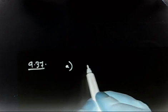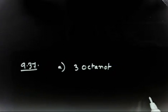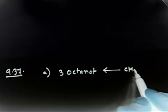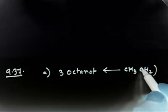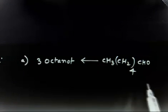This problem (9.37) is again related to Grignard reagents. The question asks: how would you synthesize the following compounds using Grignard reagents and any other necessary reagents? The first target is 3-octanol, which we have to prepare from hexanal, that is CH₃(CH₂)₄CHO.